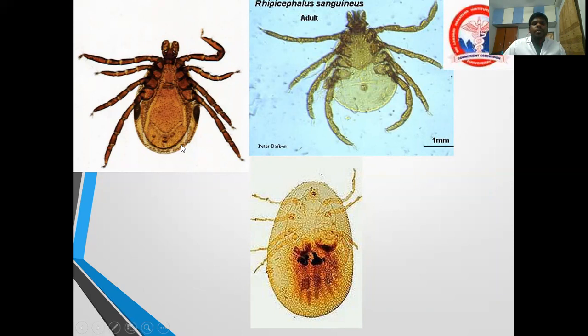In this picture, scutum is present all over the body — this is male hard tick. Here, only one-third of the body shows scutum — this is female hard tick. For soft tick: the head part is seen inside (ventrally), not visible from above, whereas in hard tick the head part is seen outside.